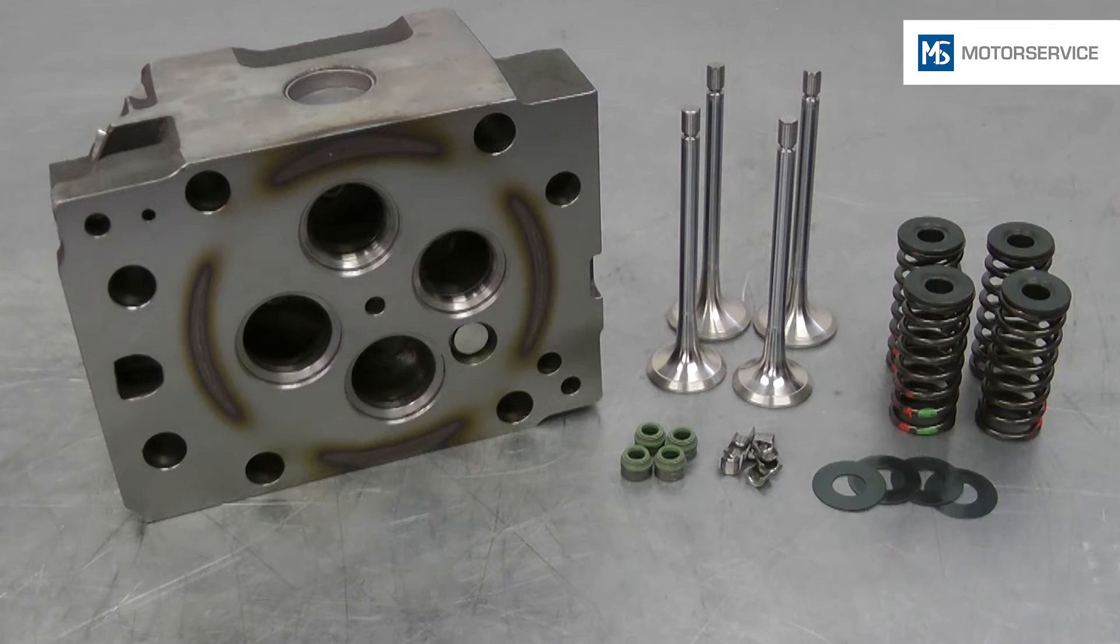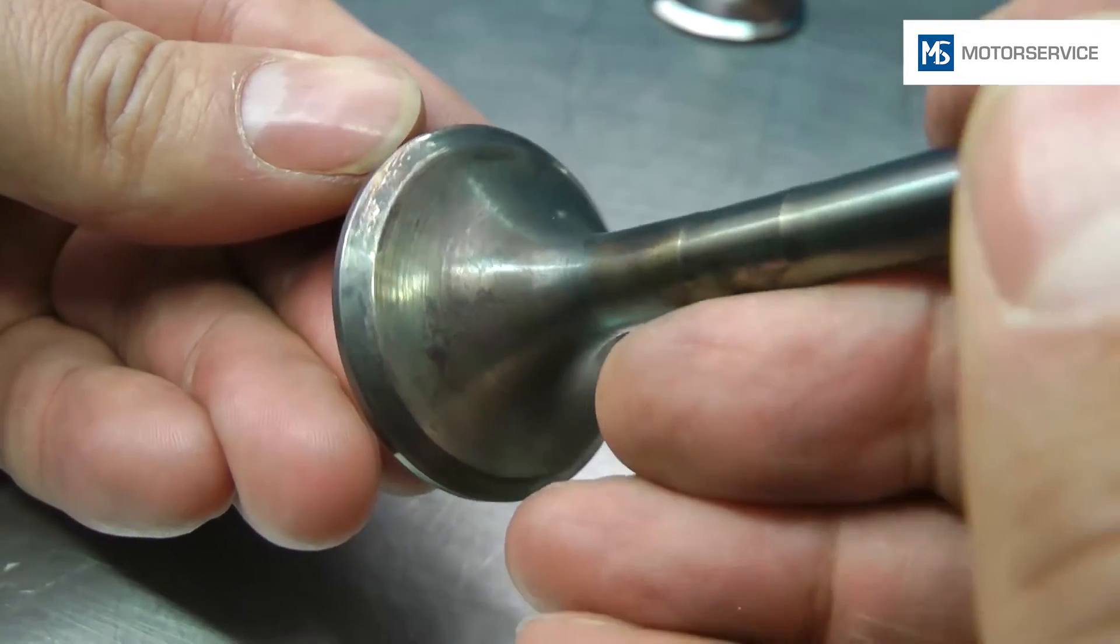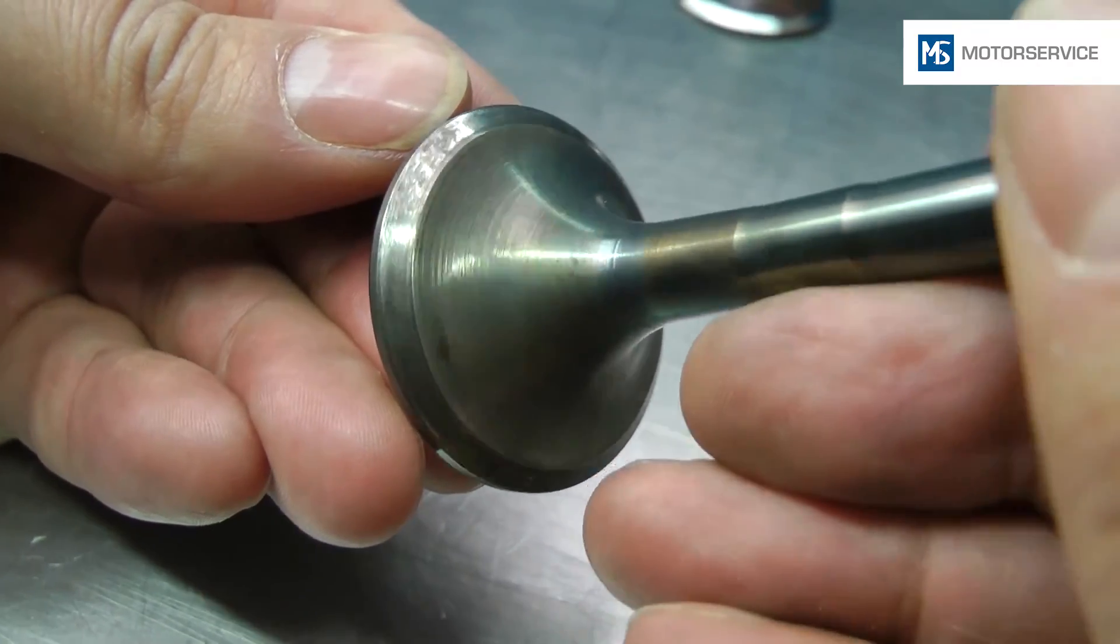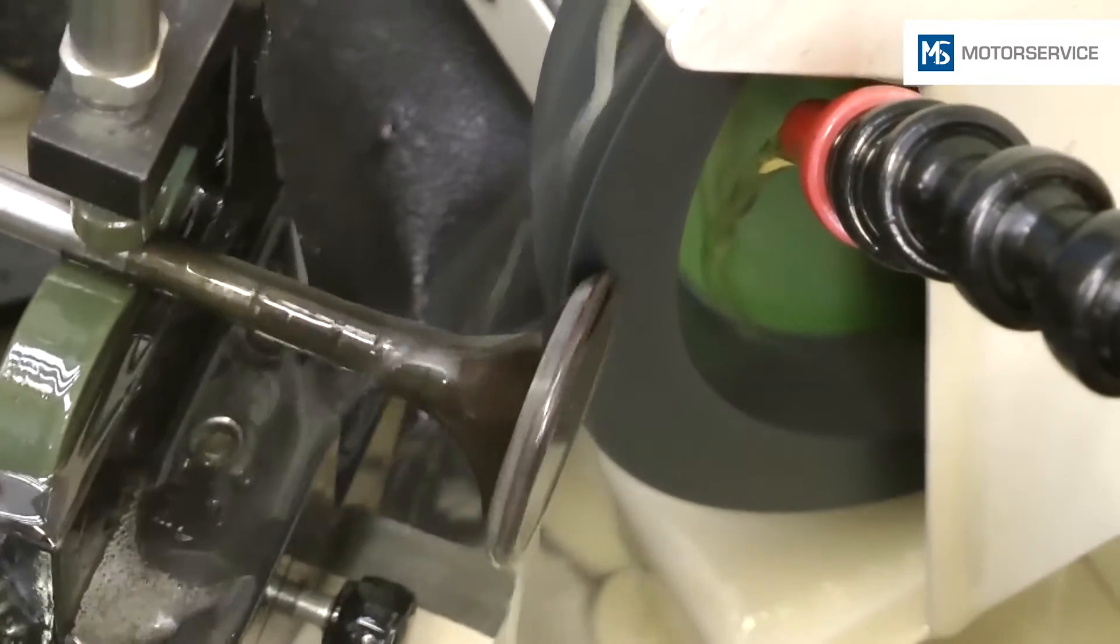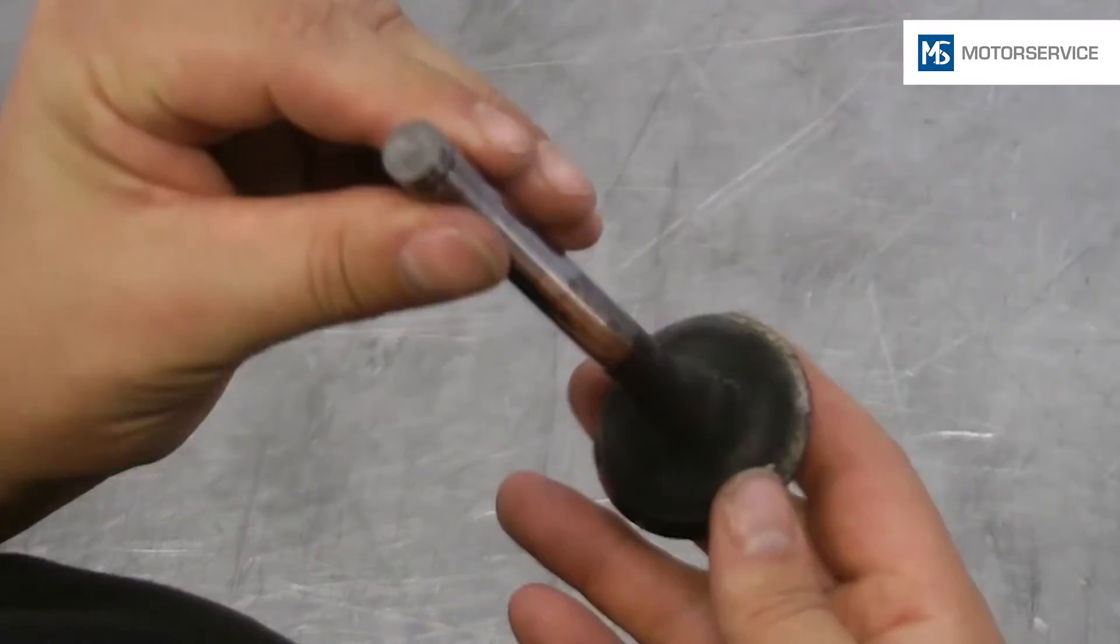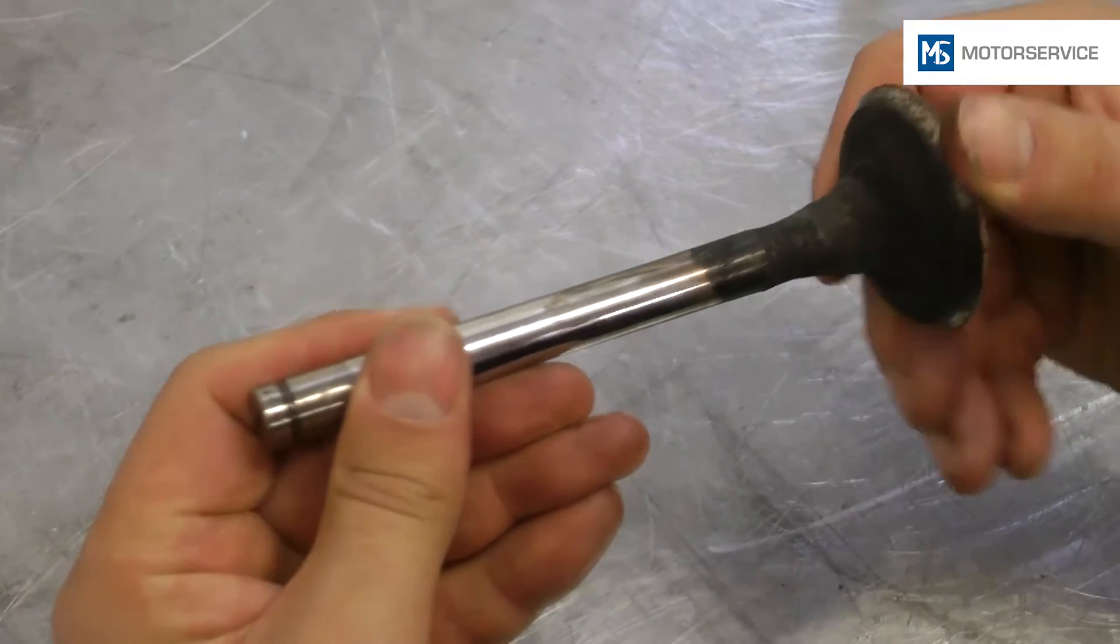The sealing face on the valve head must not be damaged. Slight wear can be removed through rework on a valve grinding machine. The valve stem faces and the stem surfaces must not be damaged.